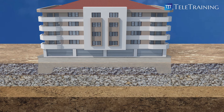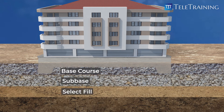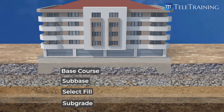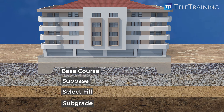Let's see more detail about each layer. From top to bottom, these layers are commonly named as Base Course, Subbase, Select Fill, and Natural Subgrade. Sometimes these layers are subdivided into more sub-layers, but here we will only cover these four main layers, one by one.